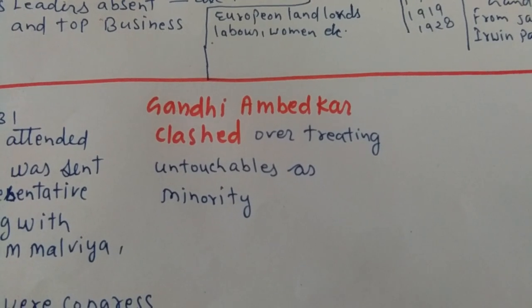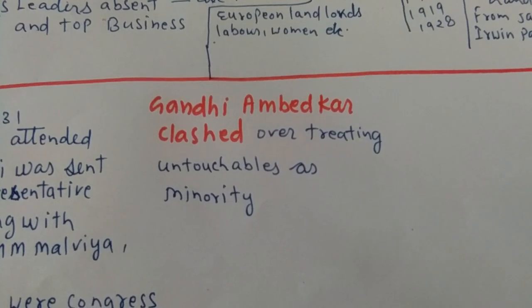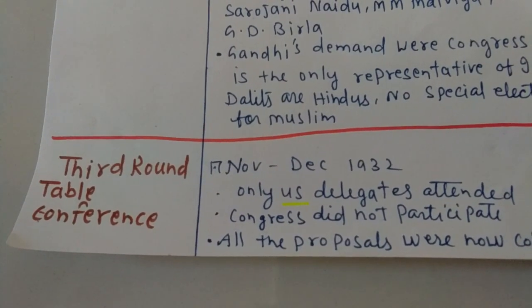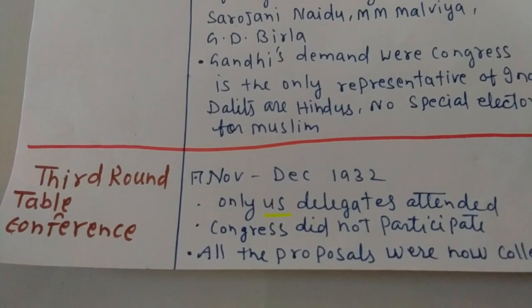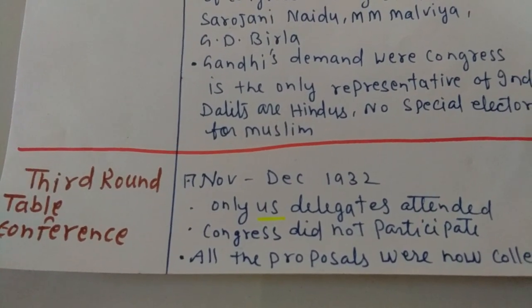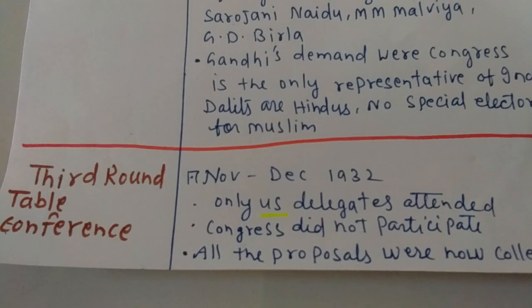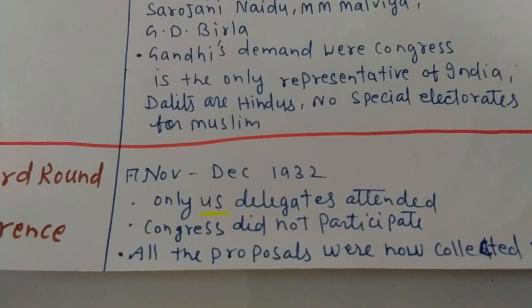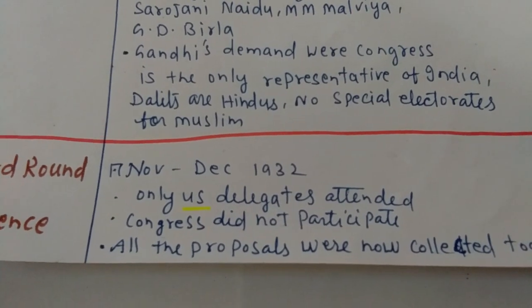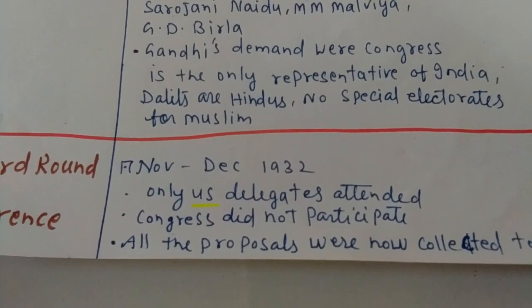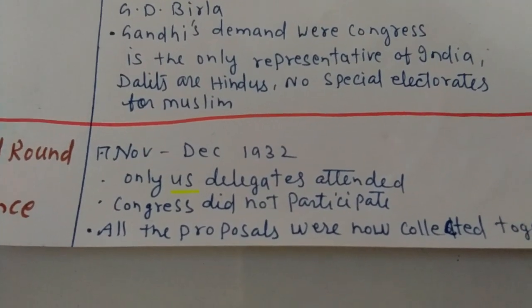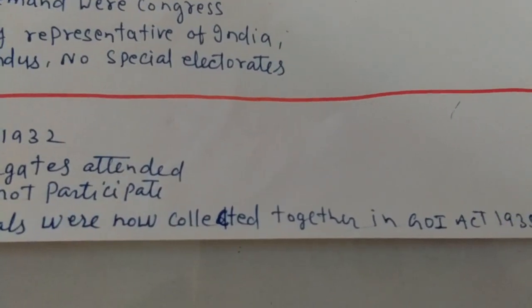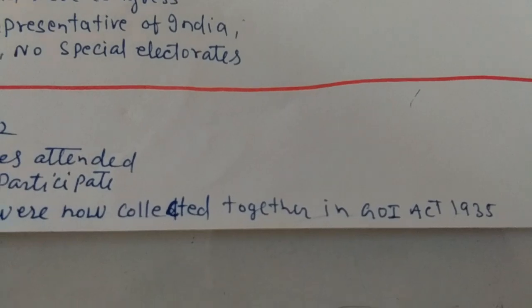The Third Roundtable Conference was held from 17th November to December 1932. Only 45 delegates attended this conference. Congress did not participate. All the proposals from the three conferences were collected together and formed the basis of the Government of India Act 1935.